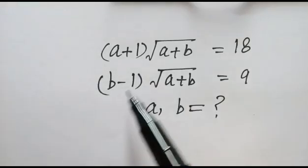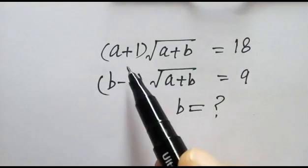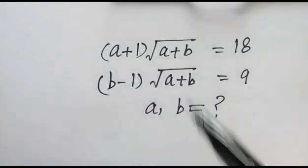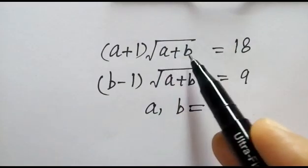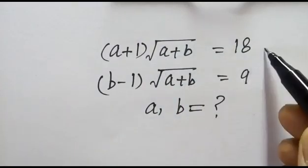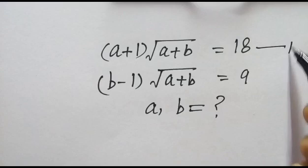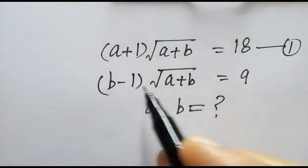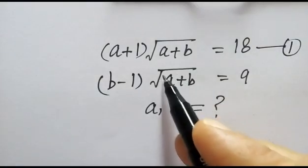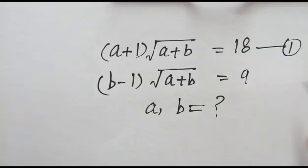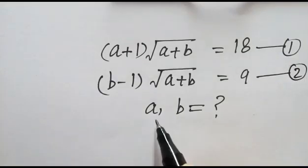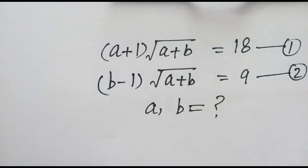Hi friends, we have two equations: A plus 1 multiplied by square root of A plus B is equal to 18 — equation 1st — and B minus 1 multiplied by square root of A plus B is equal to 9 — equation 2nd. We have to find out the value of A and B.